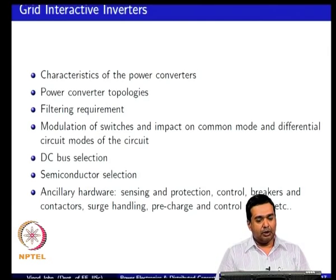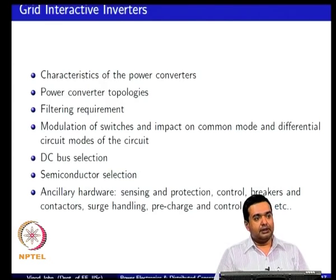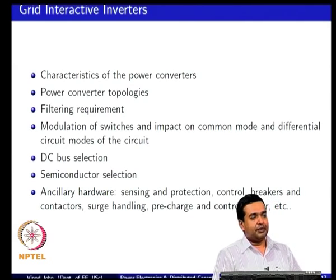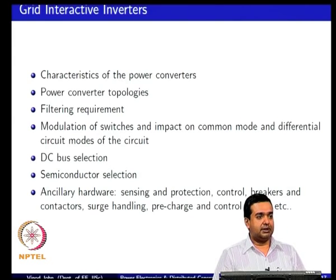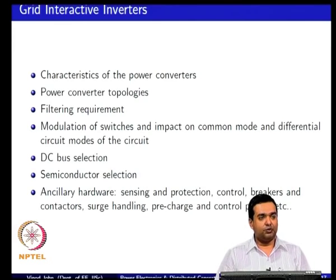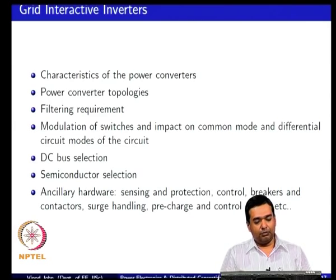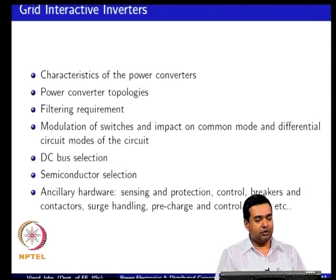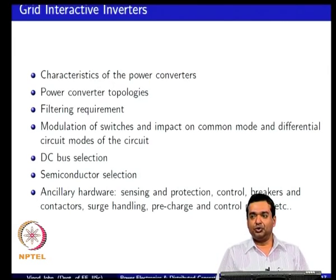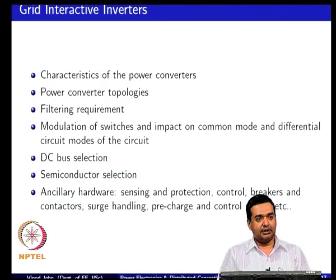The third part of the course is about power electronic details. We will look at the characteristics of power converters, the topologies, and the requirement of filtering the output of the power converter — you do not want your neighbor's computer to shut down every time your solar panel generates power. We will look at filtering, the way you modulate the switches and its impact on a common mode and differential mode basis, and how to select the DC bus — primarily the DC bus capacitors — for a voltage source converter.